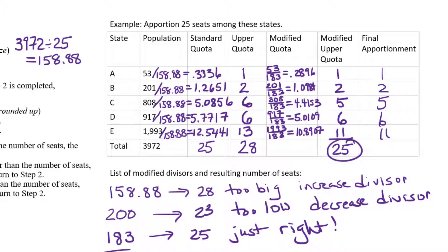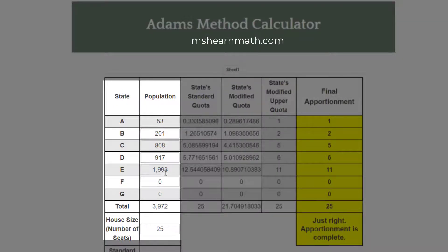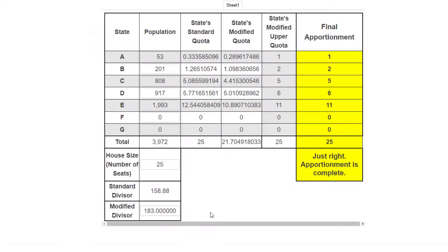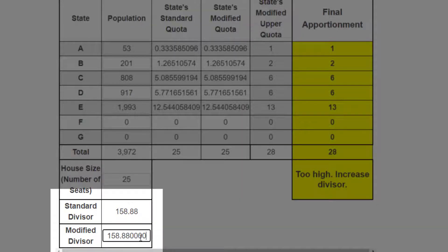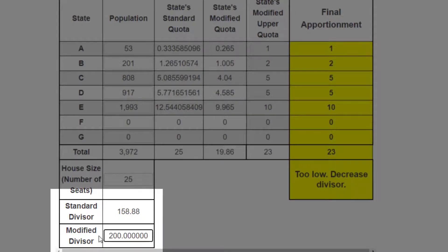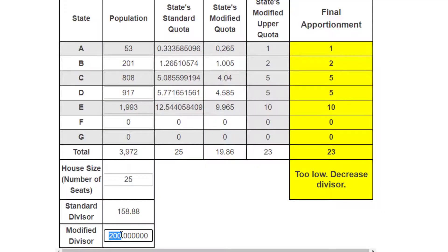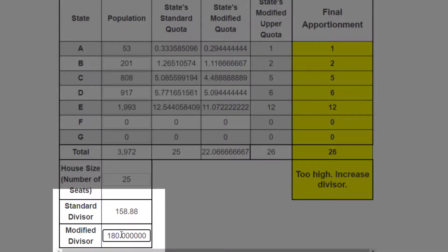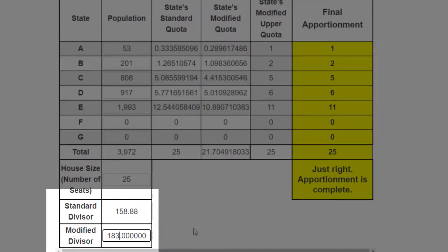You can also check your work on my website MissHearnMath.com. I have an Adams method calculator. You enter the populations and you enter the house size and it's going to give you the standard divisor of 158.88. So if you enter that standard divisor in the bottom box, it will tell you that that would apportion 28 seats which is too high so you should increase your divisor. And then if you enter say 200, it says 23 seats, too low, decrease your divisor. If you then say, okay, I need something between 158.88 and 200. I'll try 180. It says too high, increase.